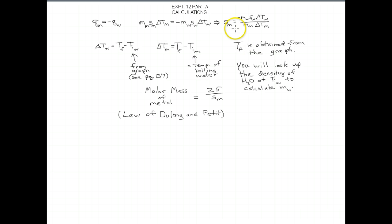Plug those in, get the specific heat of the metal. That's one thing you're going to report. The next thing you're going to calculate is use the Law of Dulong and Petit to approximate the molar mass of the metal. Then all you do is take the number 25, divide by the specific heat that you get for the metal from this calculation over here.